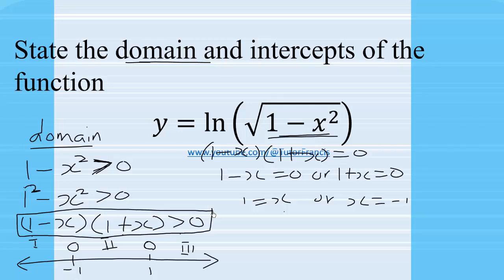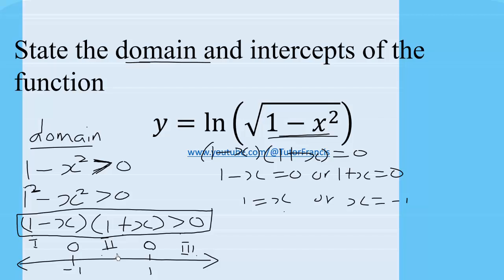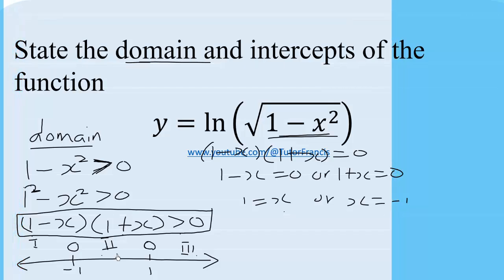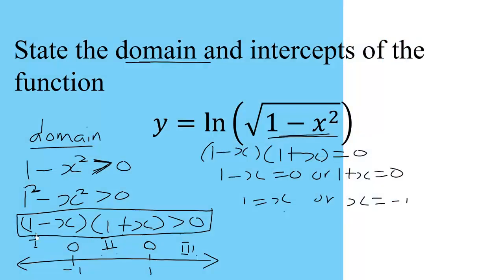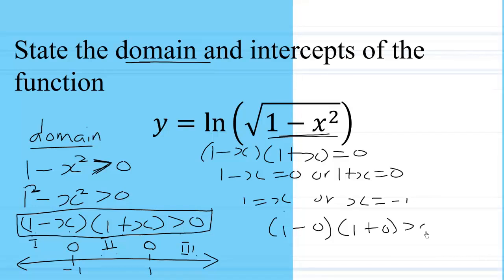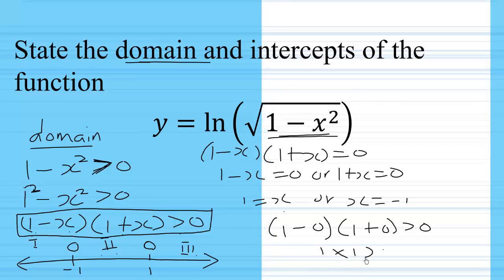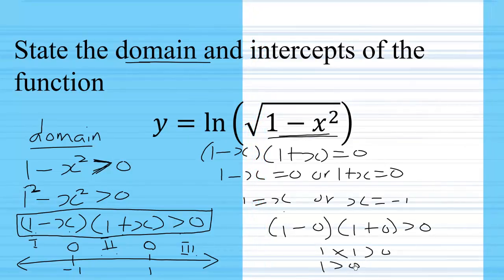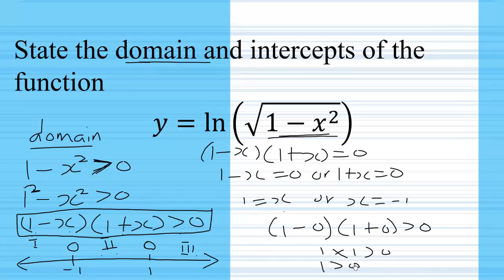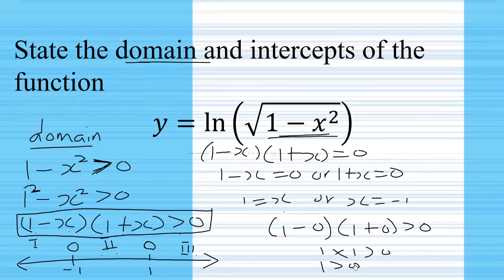Let's pick a value from region 2, where it's easy to evaluate — I'll pick 0. Substituting 0 gives us (1 minus 0)(1 plus 0) greater than 0, which is 1 times 1 equals 1, and 1 is greater than 0, which is true. So all values in region 2 satisfy that inequality.